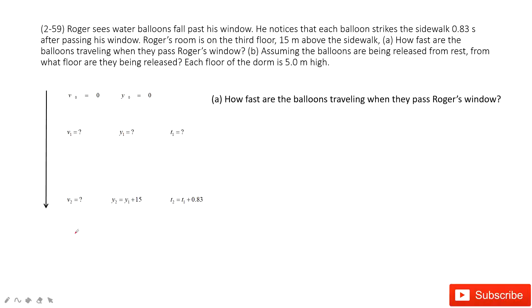This one is not so difficult as it looks like. Roger sees water balls fall past his window. He noticed that each water ball hit the sidewalk 0.83 seconds after passing his window. Roger's room is on the third floor, 15 meters above the sidewalk. So now let's draw a picture and see what happens.